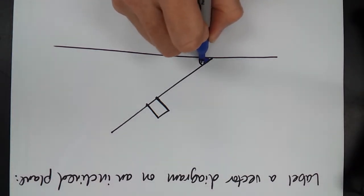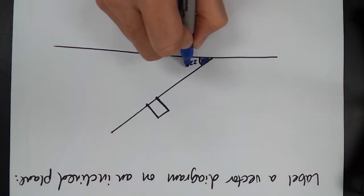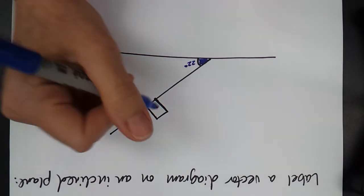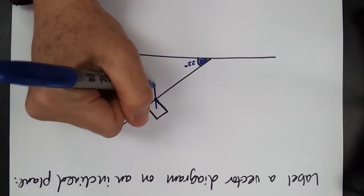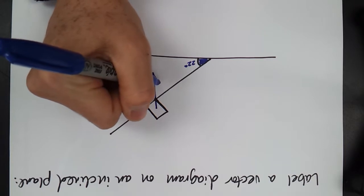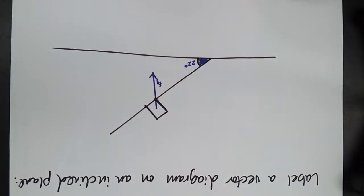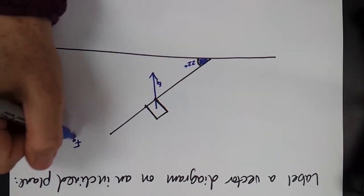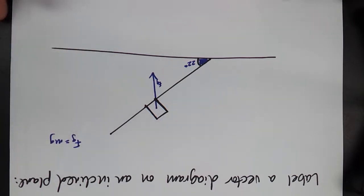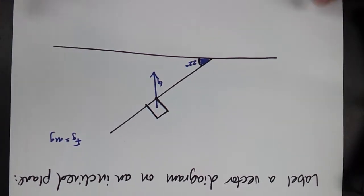So this angle here, I'm just going to label as 22 degrees. I'm going to say this is my Fg. I always start with Fg. We know that Fg equals mg, mass times acceleration due to gravity on Earth, will give us our weight on Earth.